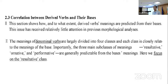2.3: Correlation between derived verbs and their bases. This section shows how and to what extent derived verbs' meanings are predicted from their bases. This issue has received relatively little attention in previous morphological analyses. The meanings of denominal verbs are largely divided into four classes, and each class is closely related to the meanings of the base. Importantly, the three main sub-classes of meanings — resultative, ornative, and performative — are generally predictable from the bases' meanings. Here we focus on the resultative class.